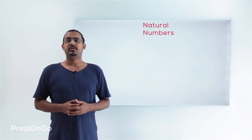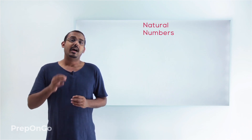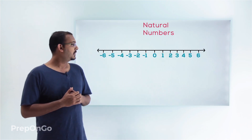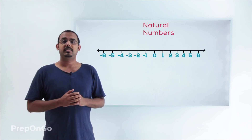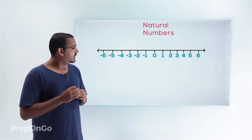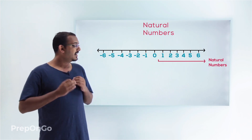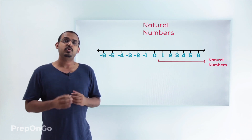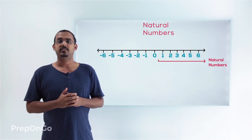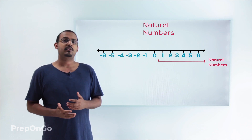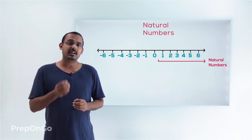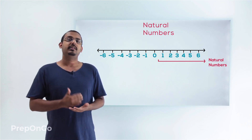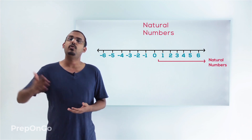Let's start with natural numbers. Natural numbers are the numbers which are generally used in counting tangible items. Let's bring out a number line and try to understand what natural numbers exist. The numbers one onwards are the numbers which are called natural numbers. These are the numbers we use when counting tangible items — for example, counting the number of apples in an apple cart. You start with the number one; you cannot count a zeroth apple. So all natural numbers start with one and go on to infinity.